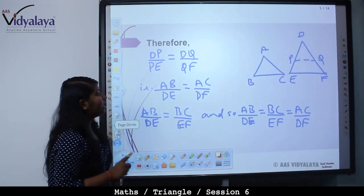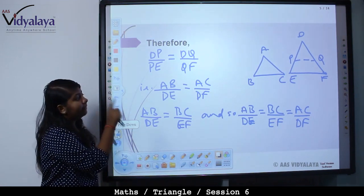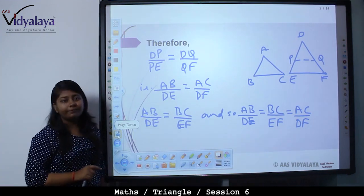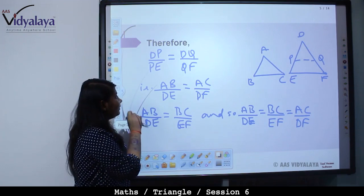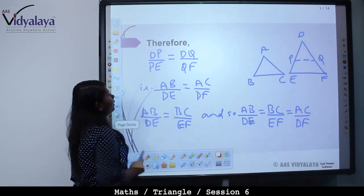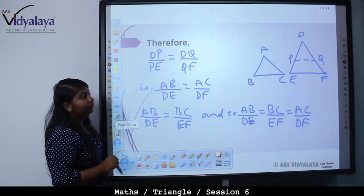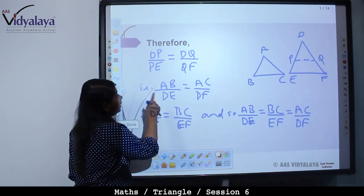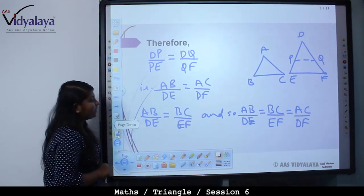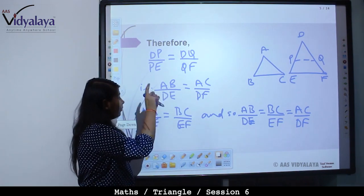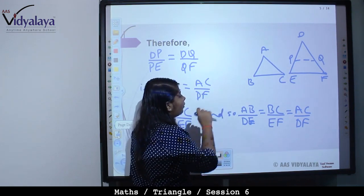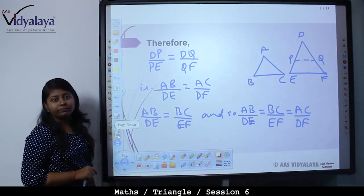Using the basic proportionality theorem, since PQ is parallel to EF, we get DP upon PE is equal to DQ upon QF. That is, AB upon DE is equal to AC upon DF, and AB upon DE is equal to BC upon EF. Therefore, AB upon DE is equal to BC upon EF is equal to AC upon DF. So the sides are in proportion.